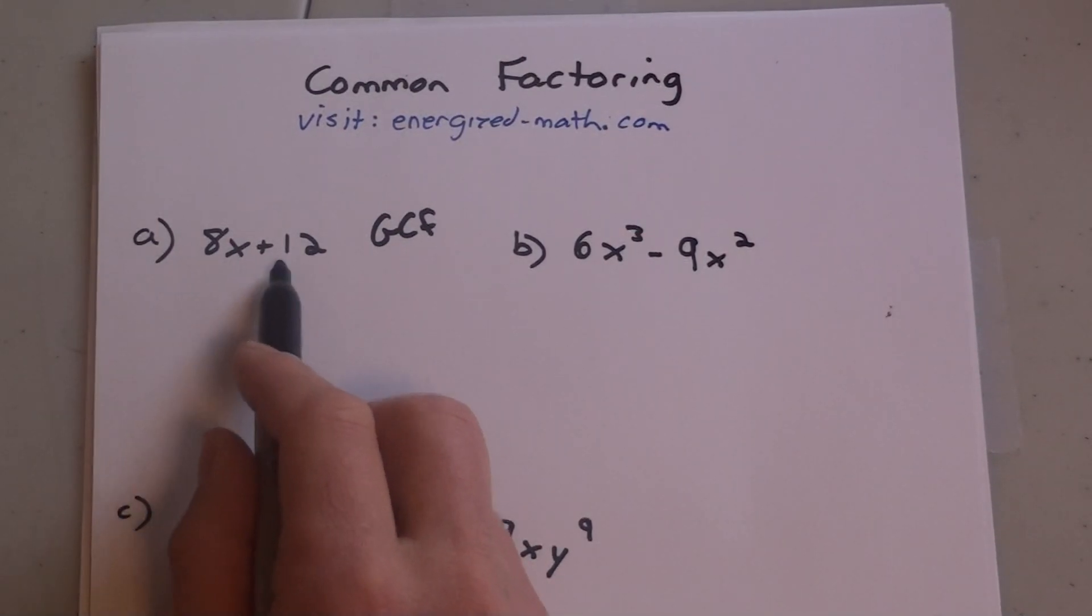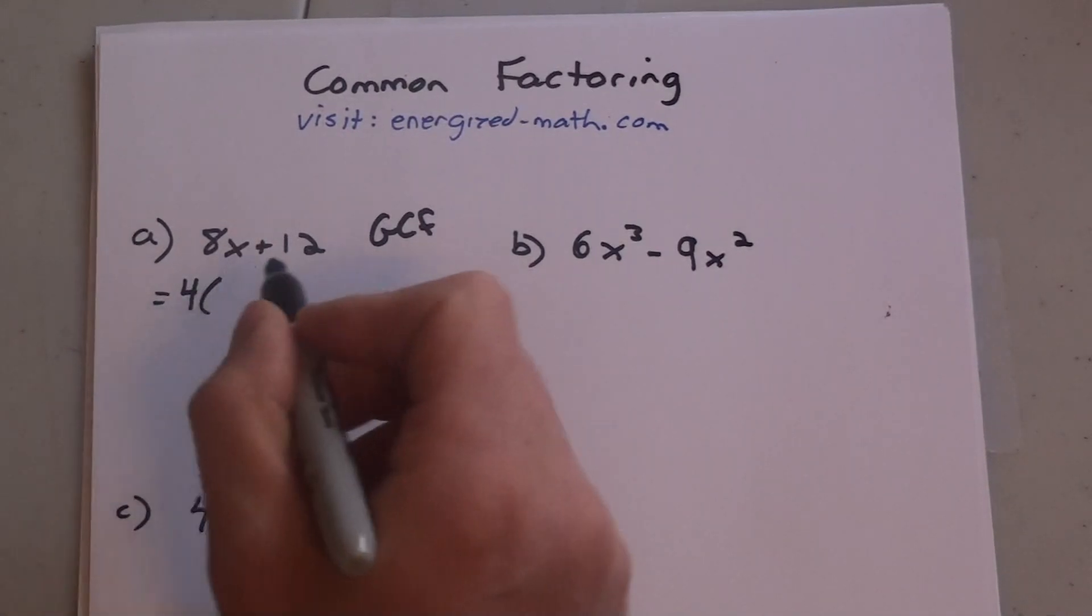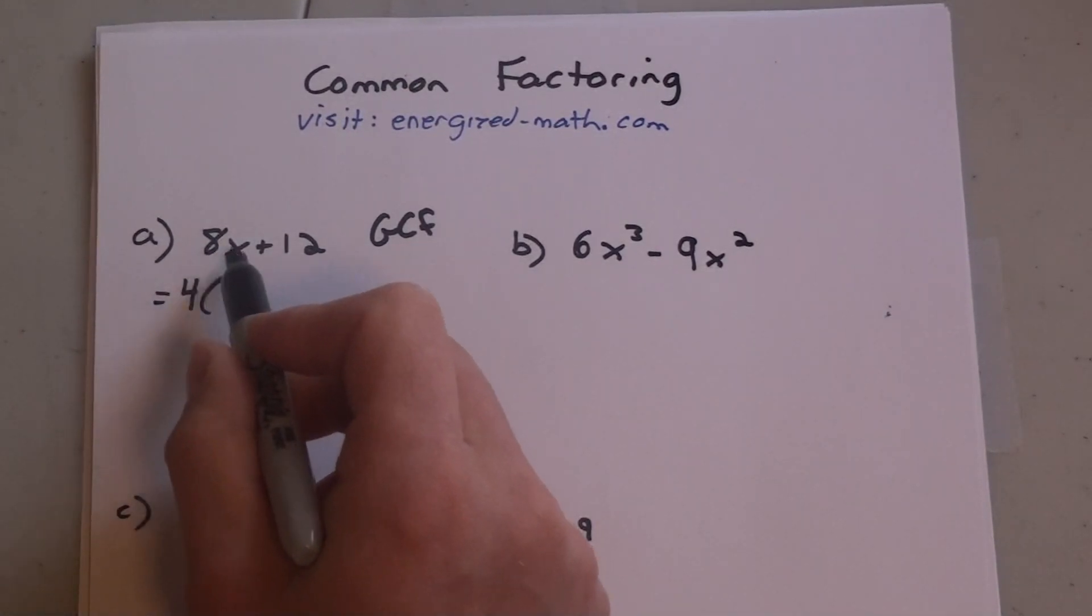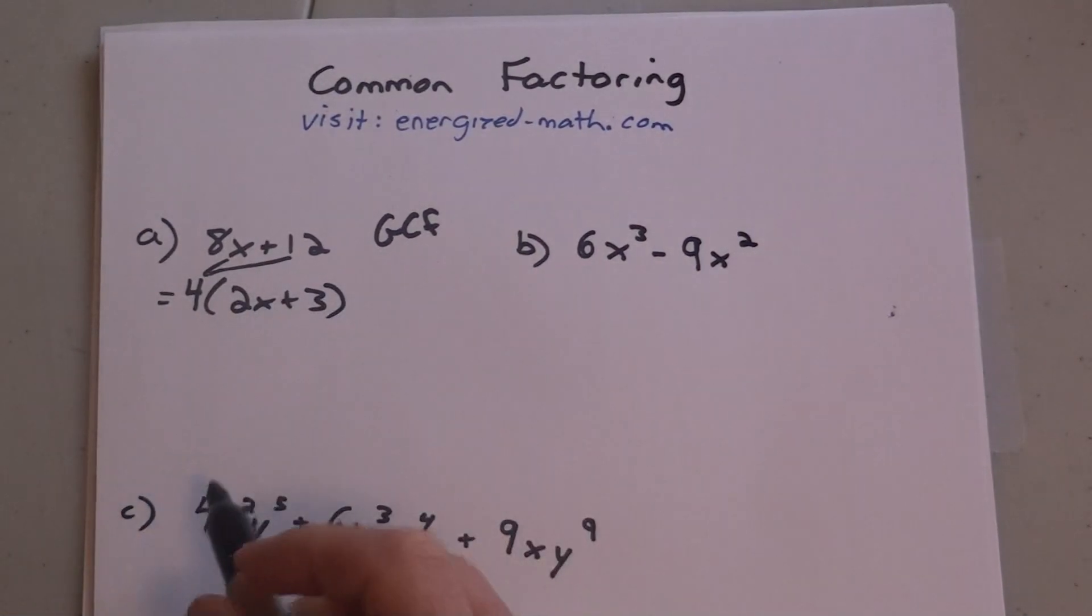In this case, 8x plus 12, you have a 4 that you can divide out from both terms. So you put your 4 in front, the greatest common factor, and then divide both those terms by 4. You'll have 2x plus 3 left in brackets.